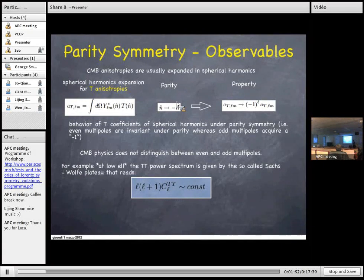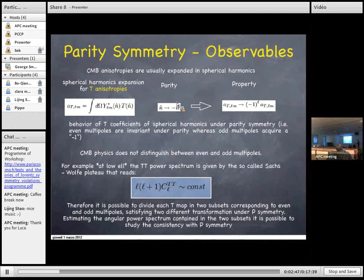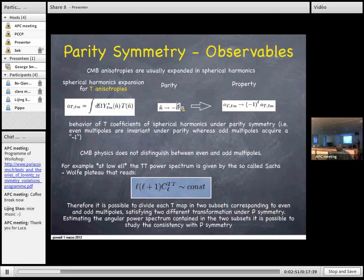We are used to expand CMB anisotropies in spherical harmonics, so we have to understand how the coefficients of the spherical harmonic expansion behave under parity transformation. After some algebra for the temperature anisotropies, we can find easily this relation is satisfied. So more specifically, even multipoles are invariant under parity violation, and odd multipoles acquire a minus one. About CMB physics, as already said, does not distinguish in principle between even and odd multipoles. So therefore, is it possible to divide each temperature map into subsets corresponding to even and odd multipoles, and see if there is a kind of consistency with parity symmetry, for example, evaluating the power contained in these two subsets.